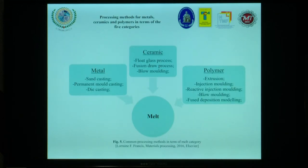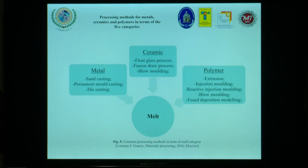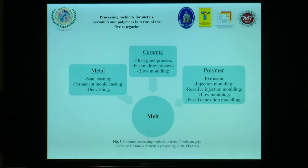Processing methods for metal, ceramic, and polymers in terms of five categories. The first category is melt material — using raw material in the melt state. For metal: sand casting, permanent mold casting, die casting. For ceramic: flowed glass processes, fusion draw process, blow molding. For polymer: extrusion, injection molding, reactive injection molding, blow molding, fused deposition modeling.